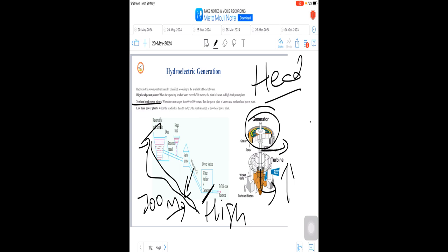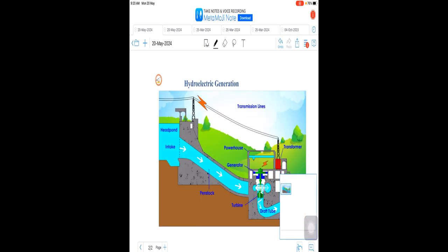After the transformer receives the power, there are electrical transmission lines through which the power is transferred to various substations. You can observe here.